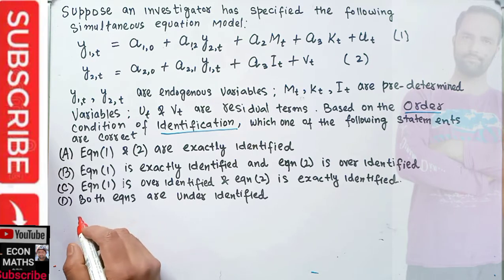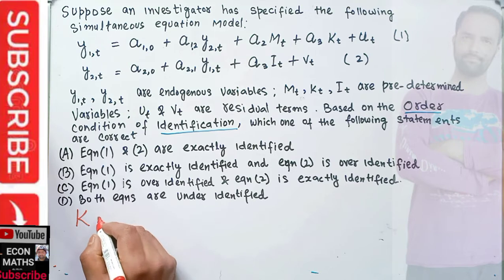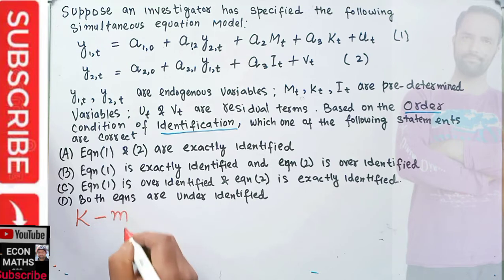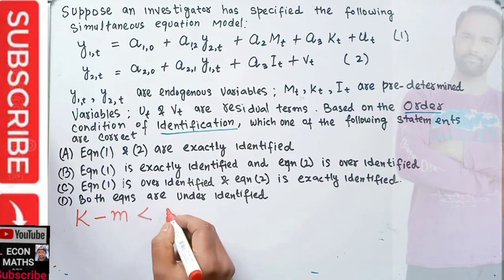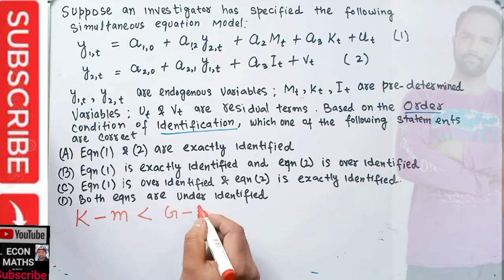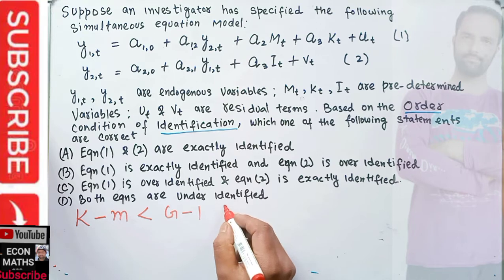If k minus m is less than g minus 1, the particular equation is unidentified.